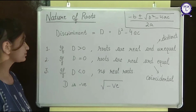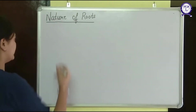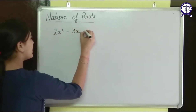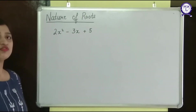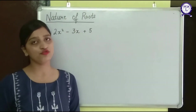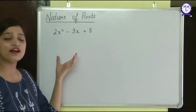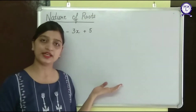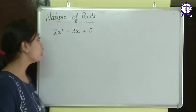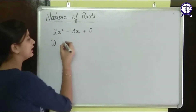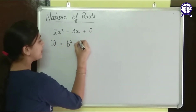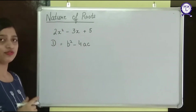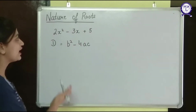Now suppose we have the equation 2x squared minus 3x plus 5, and we need to find the nature of roots. The question can say 'find the nature of roots' or 'find the discriminant' — both are the same. So we need to find the value of D. D is b squared minus 4ac. Now, what are a, b, and c? These are the coefficients.